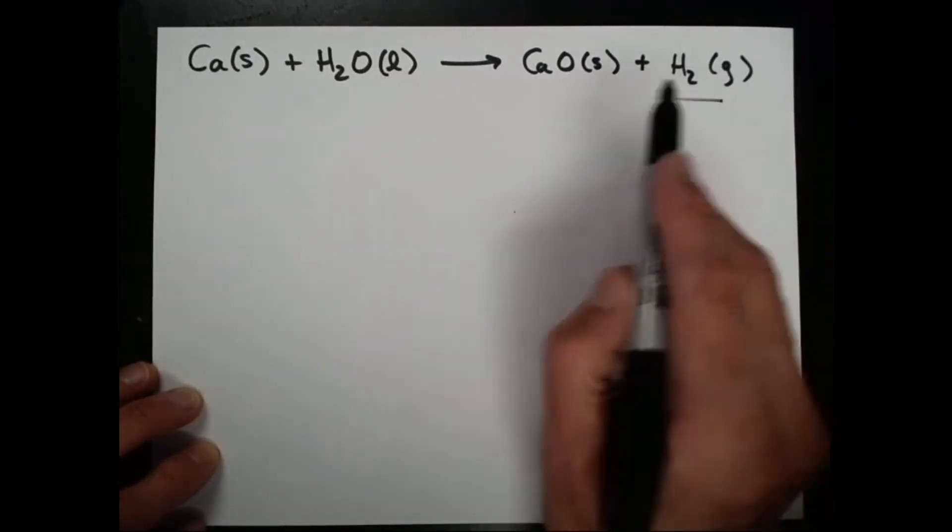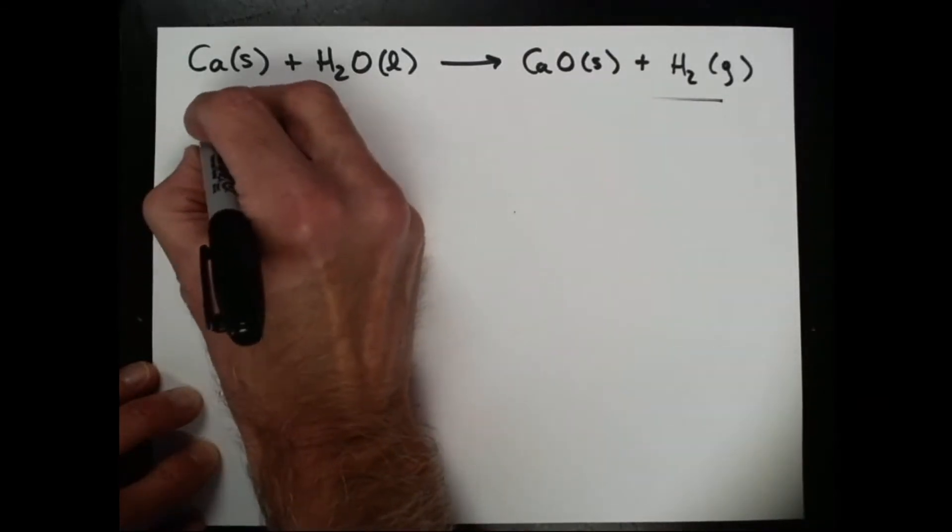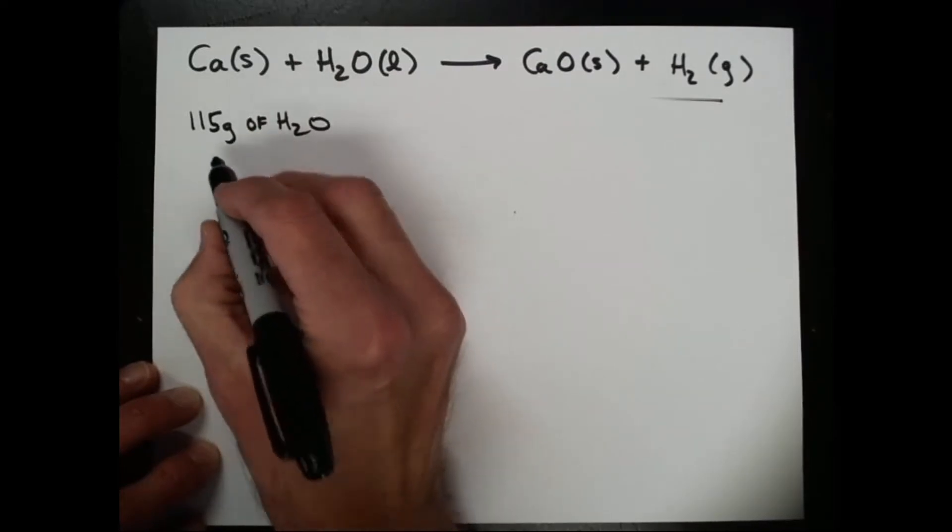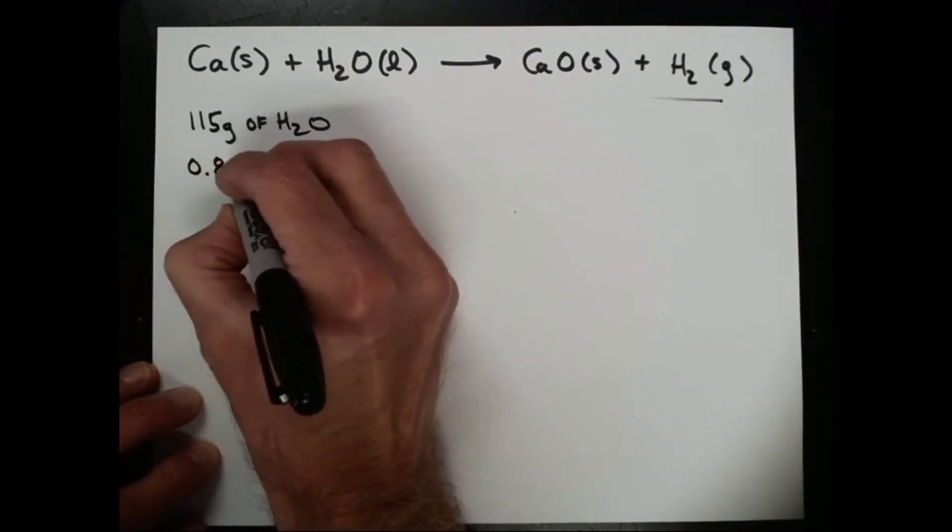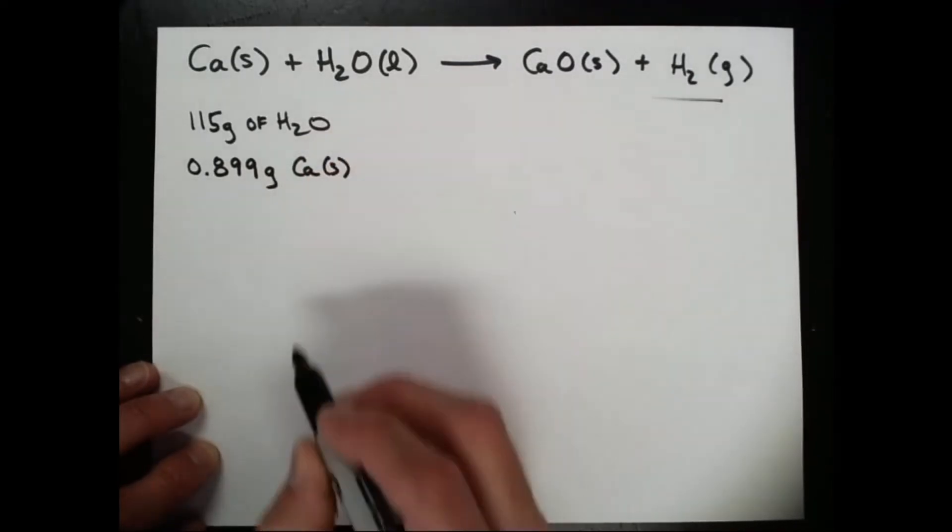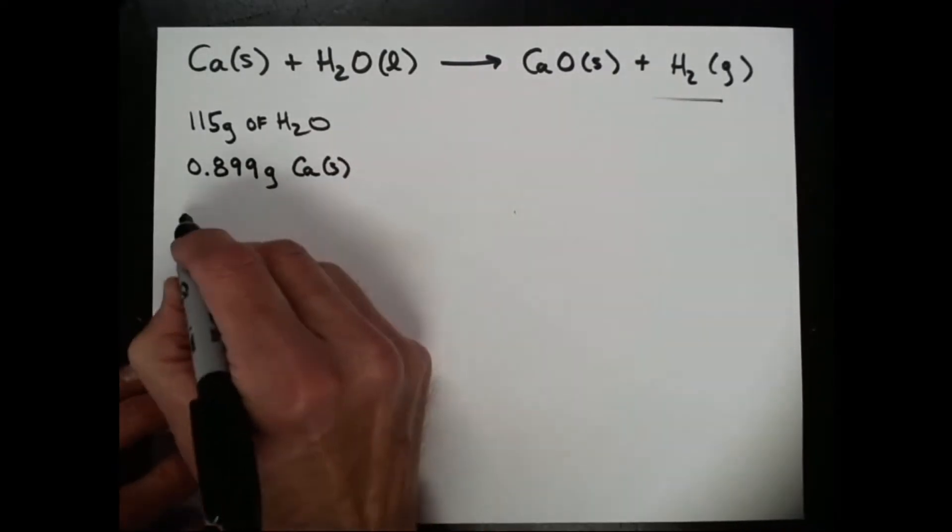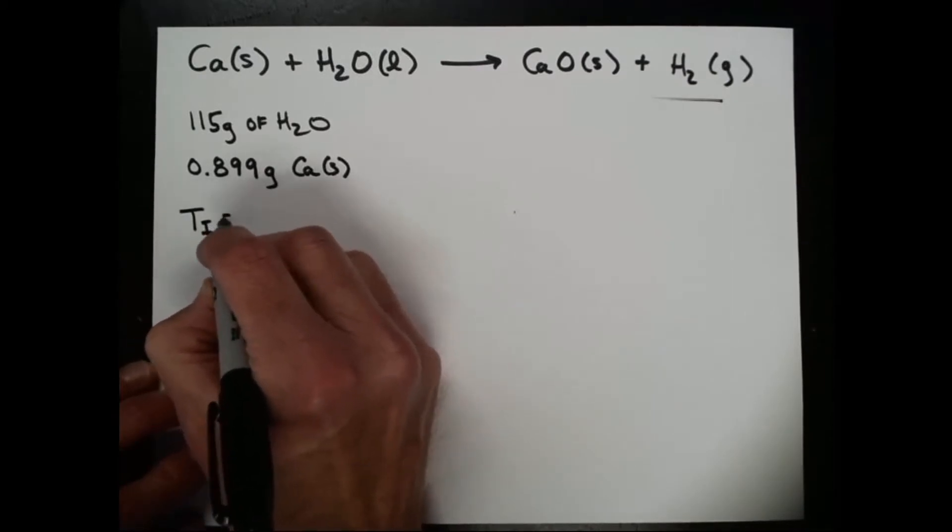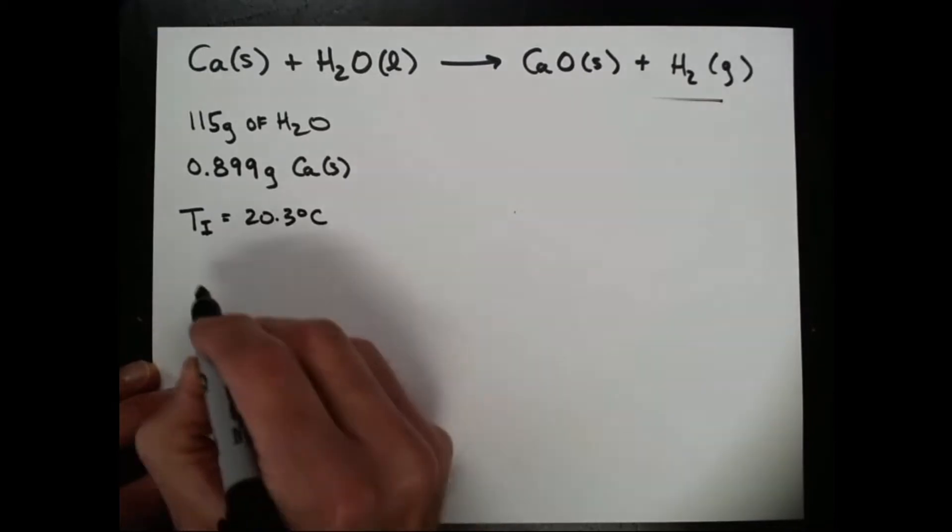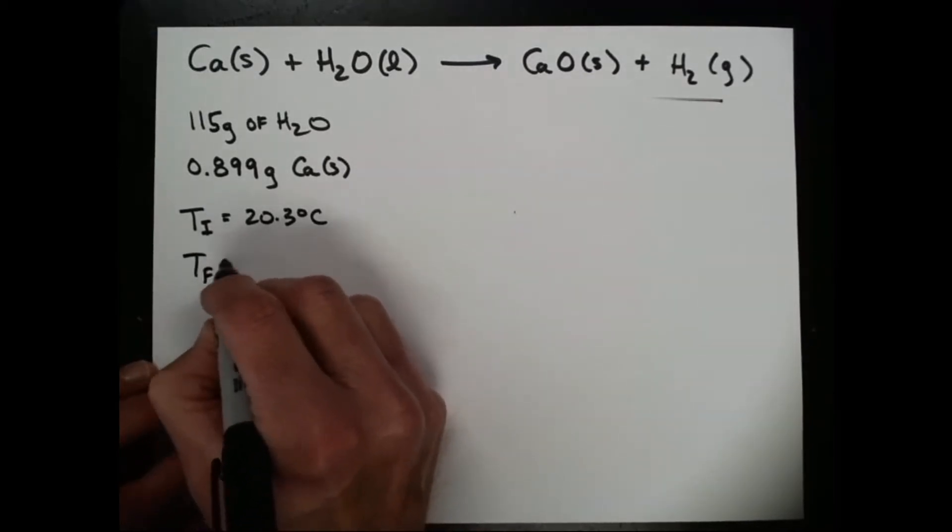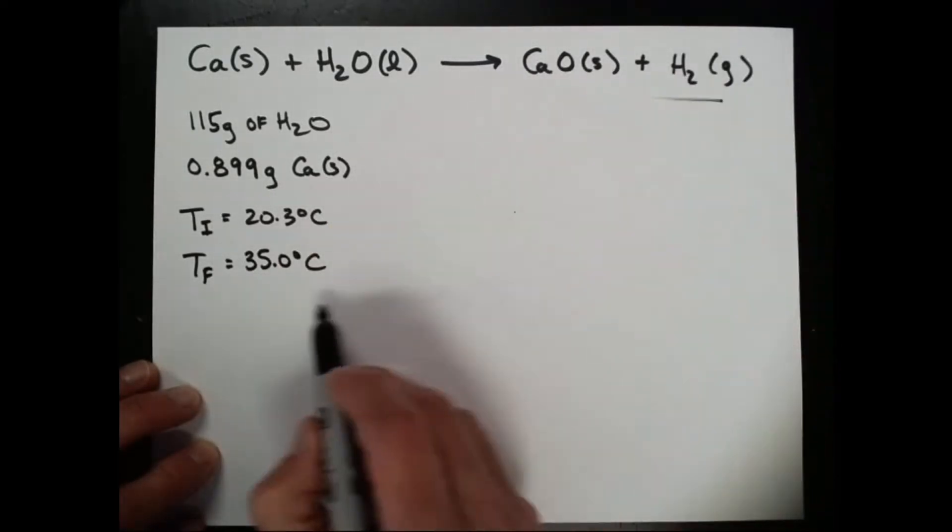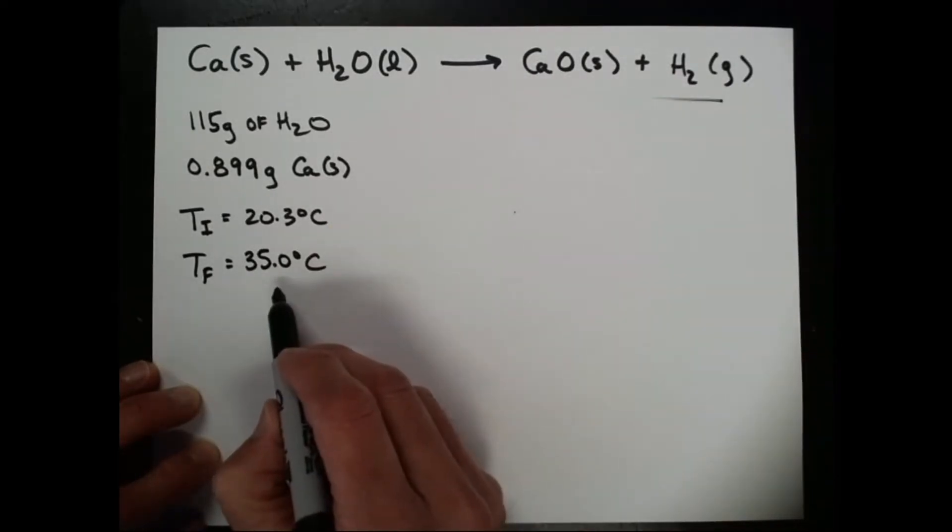You might remember that we used 115 grams of water, and to that 115 grams of water, we added 0.899 grams of calcium, solid calcium. The reaction took place, our initial temperature of the water was 20.3 degrees Celsius, and our final temperature of the water was 35 degrees Celsius. So the reaction released energy, and that energy went into the water.